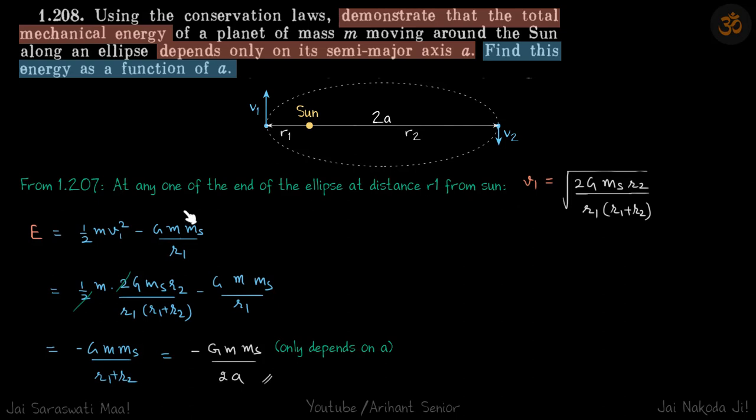So we'll put the value of v1 from here to here, and if we simplify it we get the total energy as minus GMms by 2a, which only depends on a. Hence proved.